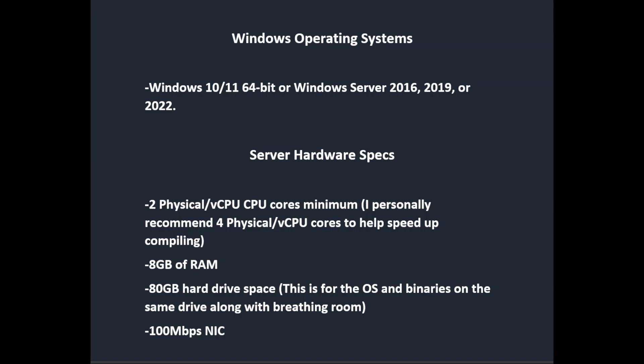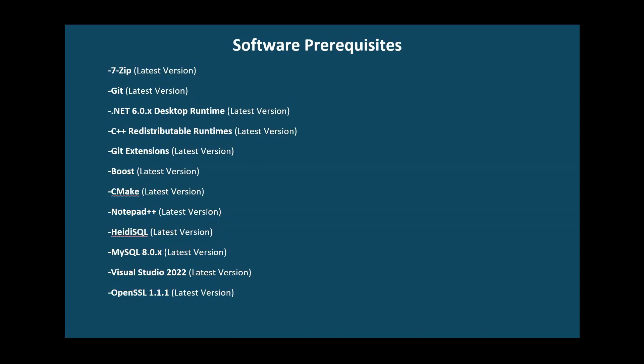Let's go over the software prerequisites. You're going to want: 7-Zip, Git, .NET 6.0 Desktop Runtime, C++ Redistributable Runtimes, Git Extensions, Boost, CMake, Notepad++ (which is optional but will make things much easier), HeidiSQL (also optional — you can choose whichever SQL management software you'd like), MySQL version 8, Visual Studio 2022, and OpenSSL 1.1.1. All of these can be the latest version.